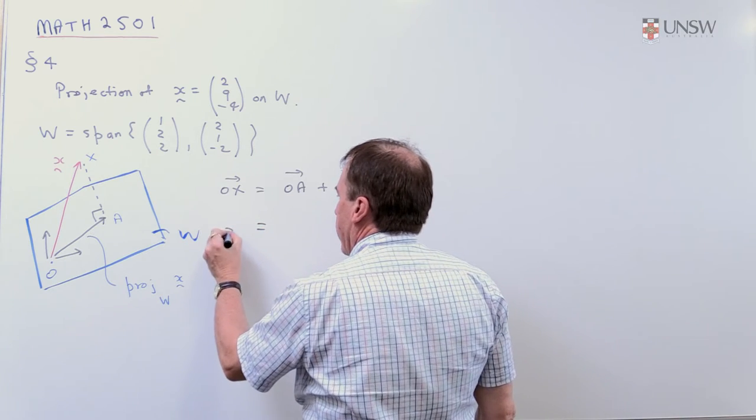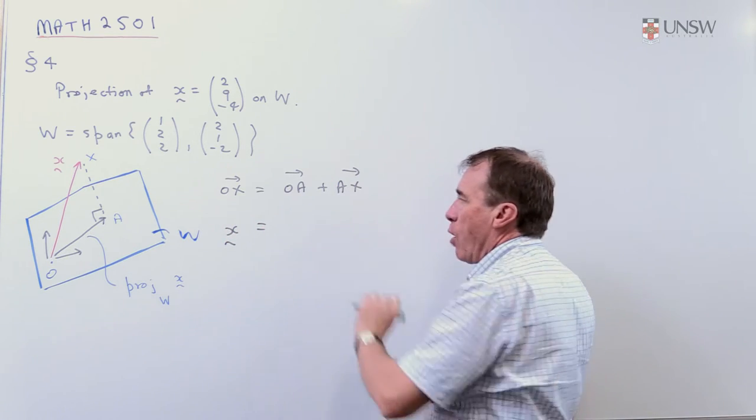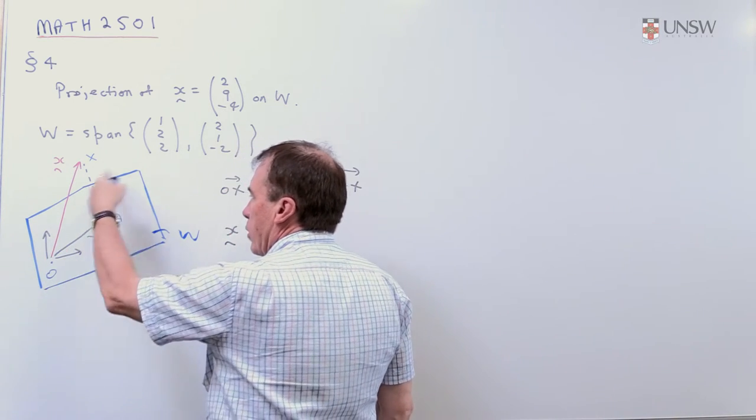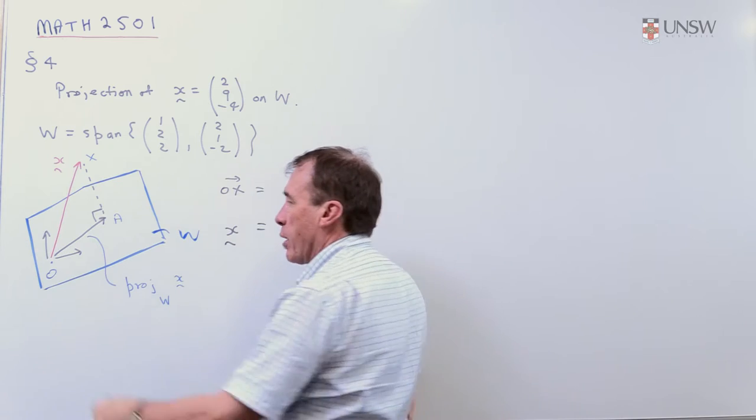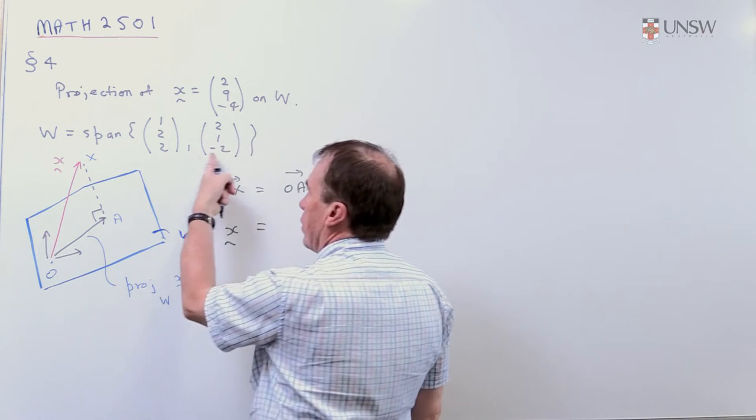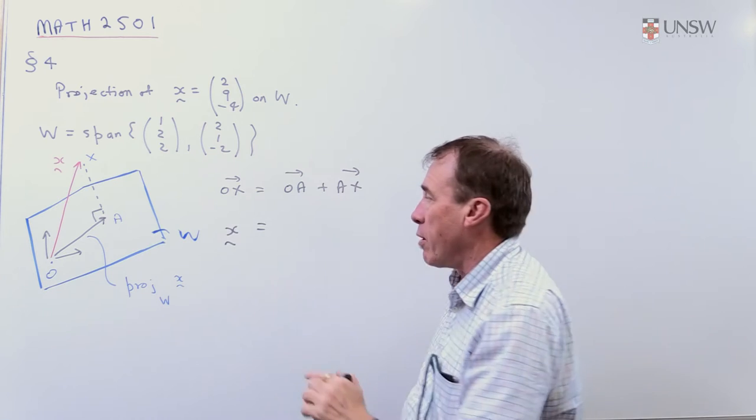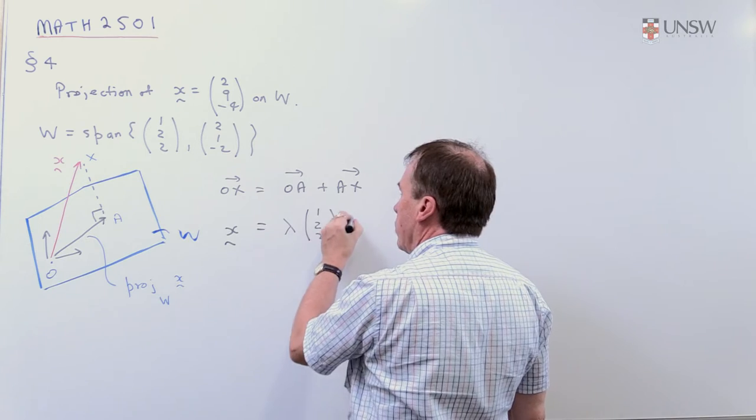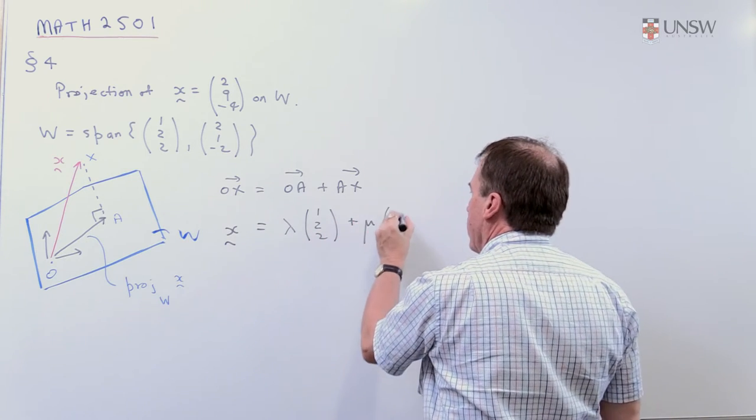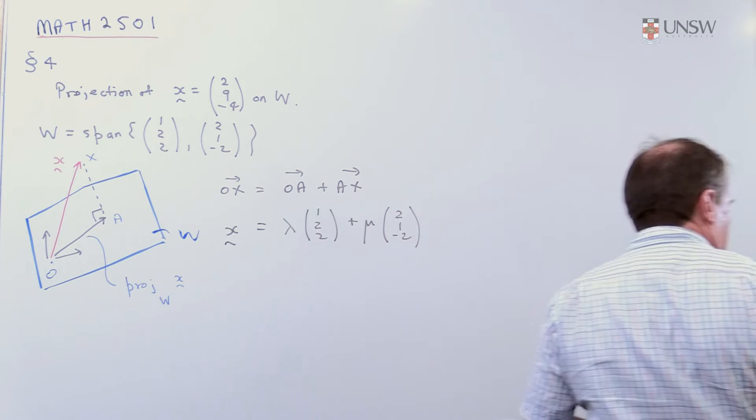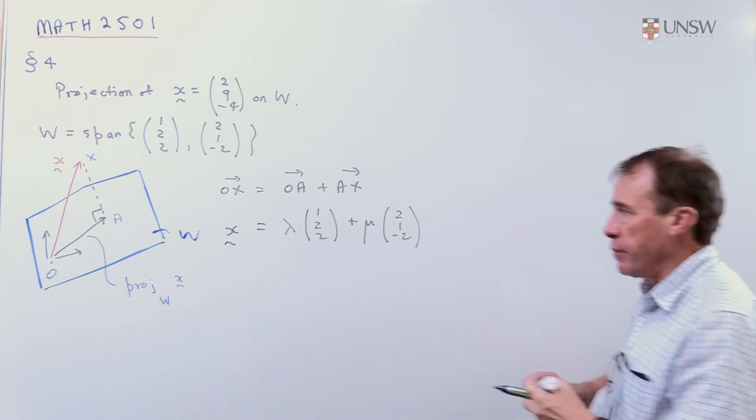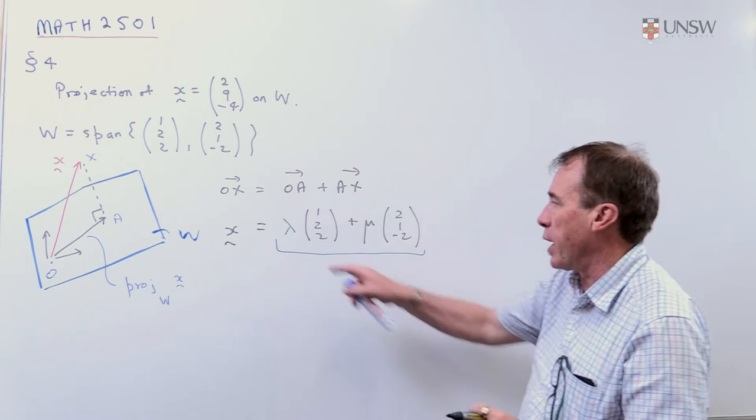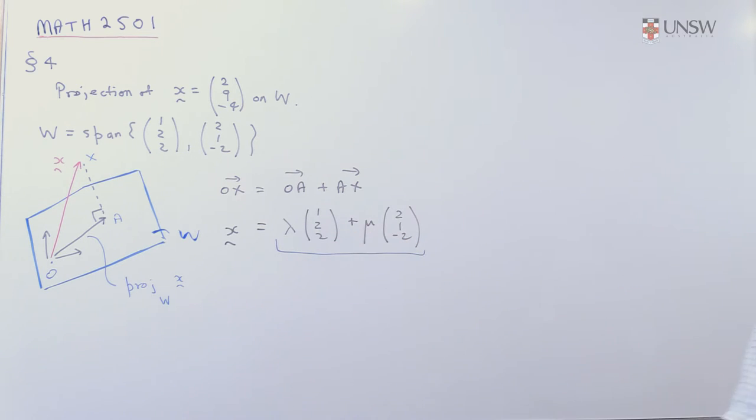However, OA, so vector OX is X. OA I can construct because the vector OA lies on the plane. So I can build it from the two basis vectors on the plane. So I can construct OA as something times (1,2,2) plus something times (2,1,-2). And remember, that's what I want to get my hands on. That's the projection. So if I can work out lambda and mu, then I've got what I'm looking for.